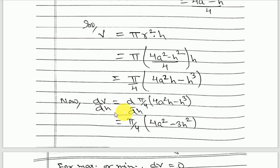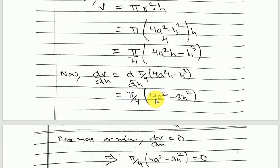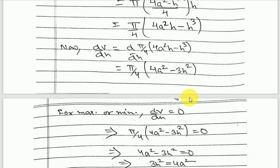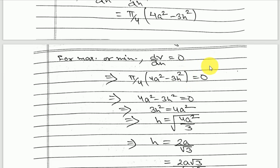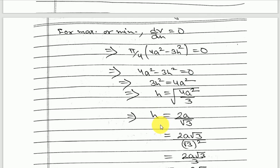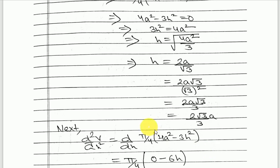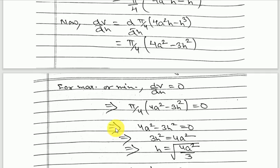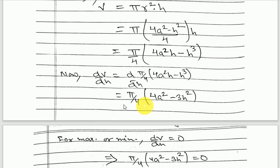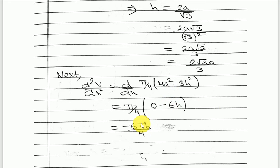Differentiating v with respect to h, we get dv/dh = π/4 × (4a² − 3h²). For maximum or minimum value, the first derivative should equal zero. Setting it to zero and solving, we get h = 2a/√3, which rationalizes to h = 2√3·a/3. Next, we find the second derivative by differentiating again, giving d²v/dh² = −6πh/4.